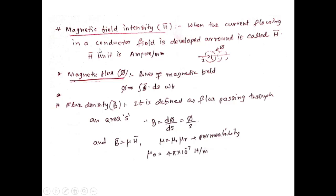Similar to electric field intensity, magnetic field intensity H bar: when current flows in a conductor, a field develops around it called H bar, with units of ampere per meter. When the current flows, magnetic flux flows surrounding the conductor line. The magnetic flux is given by ∫ B bar · dS bar. Flux density B bar is defined as flux passing through area S: B = dΦ/dS = Φ/S. The relation between B and H is B bar = mu × H bar, where mu = mu-naught × mu-r, mu-r = 1 in air, and mu-naught = 4π × 10⁻⁷.